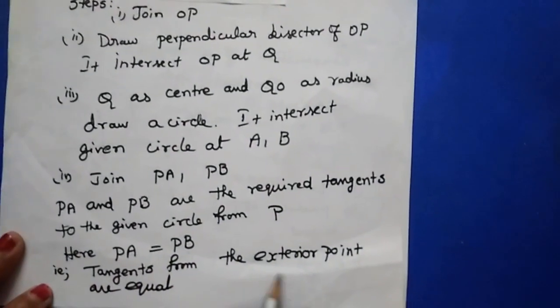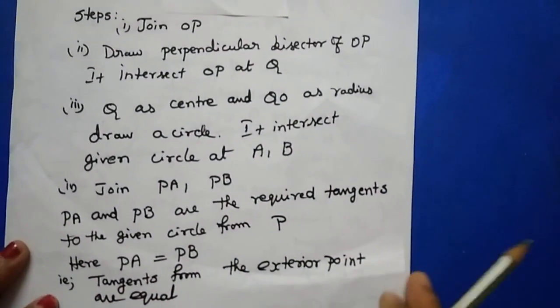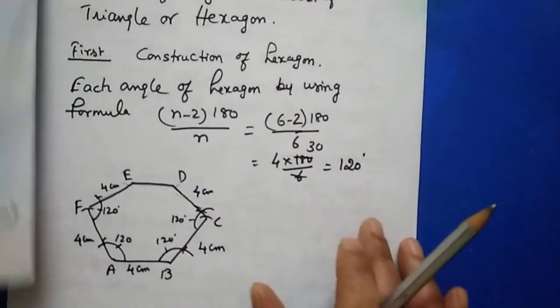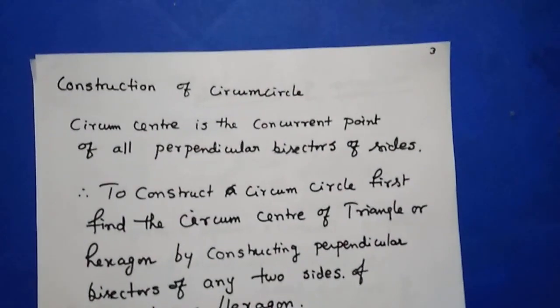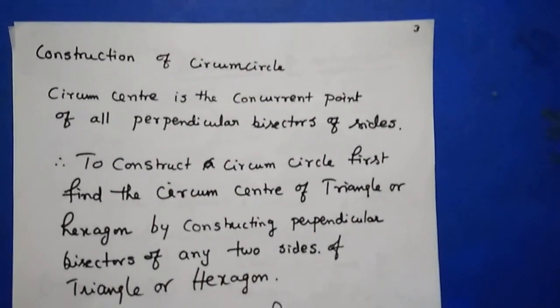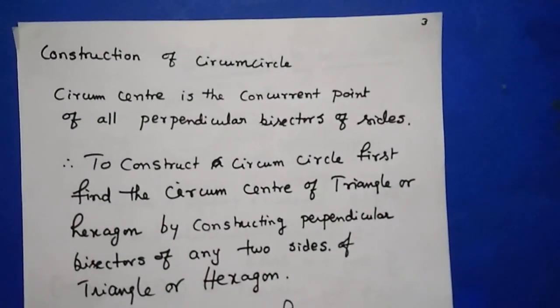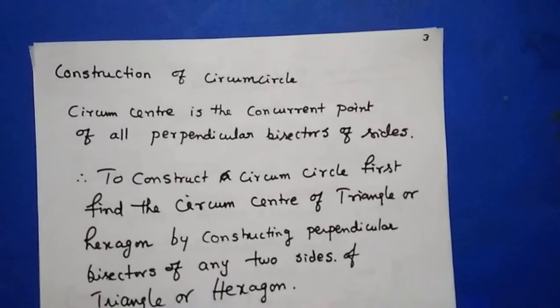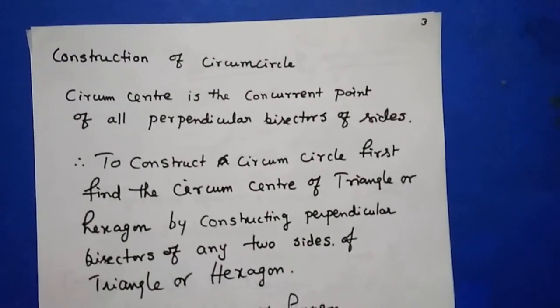PA is equal to PB. From that, we conclude: tangents from an exterior point are equal. Now you are going to construct the next one — the construction of circumcircle and incircle.